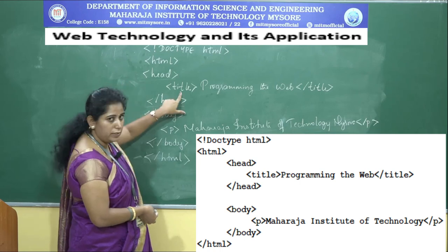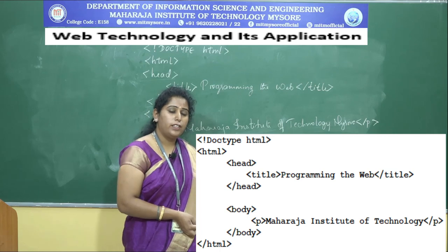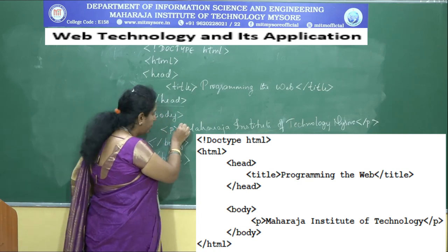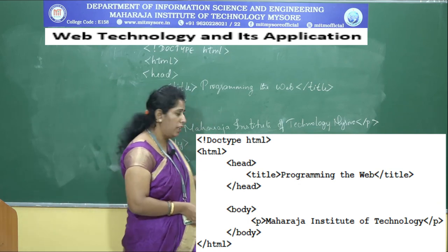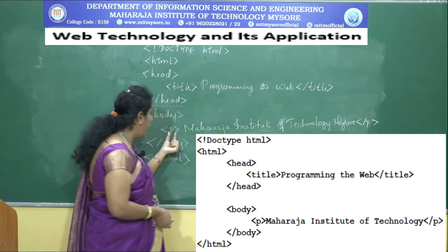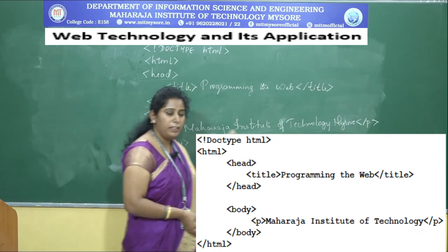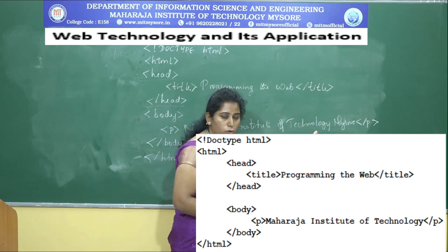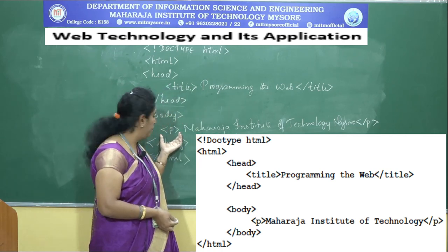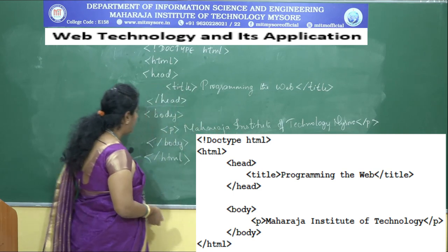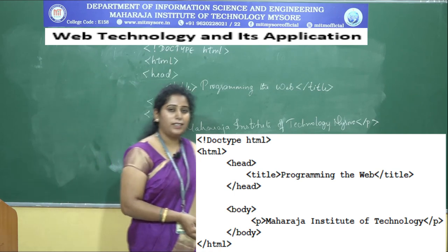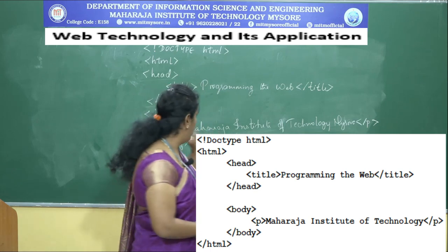In the body part, whatever implementation or operations you want to execute are given. Open a body tag, and inside it, to print a message such as 'Maharaja Institute of Technology, Mysore', use a paragraph tag named P. Open the tag, give the message you wish to print, then close the tag. You can open more paragraph tags for additional content. After finishing, close the body tag and finally close the root HTML tag. This is how a simple HTML program is written.